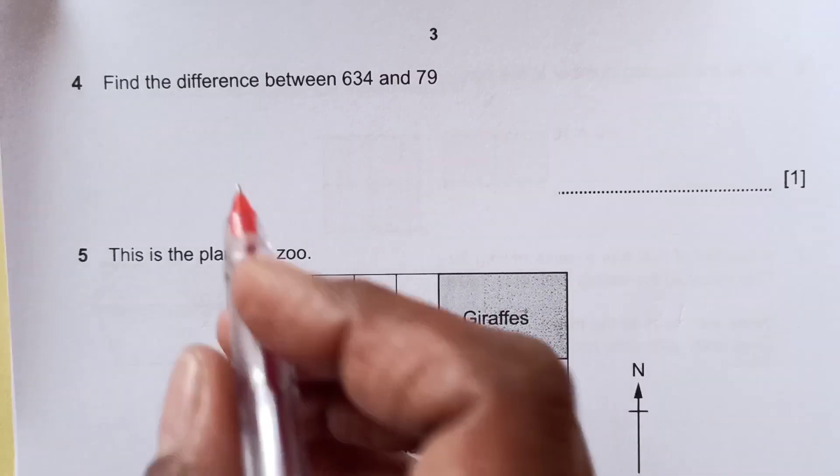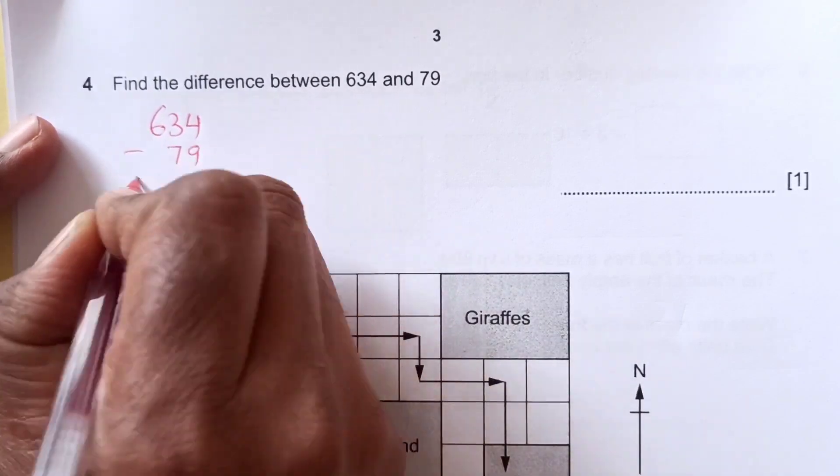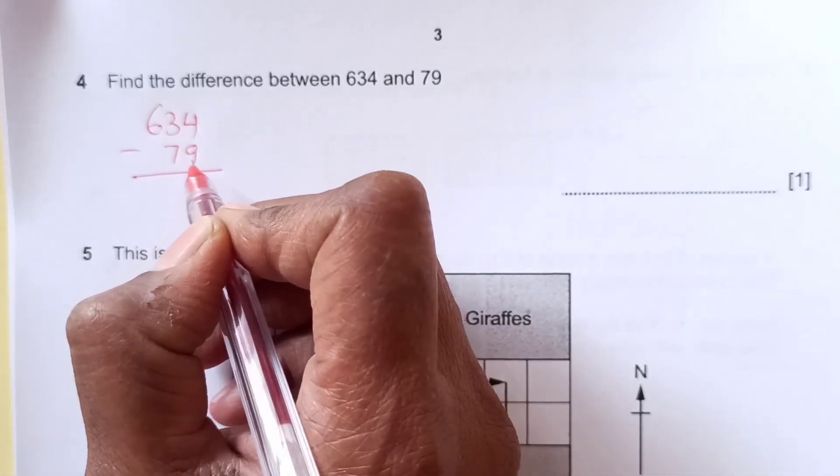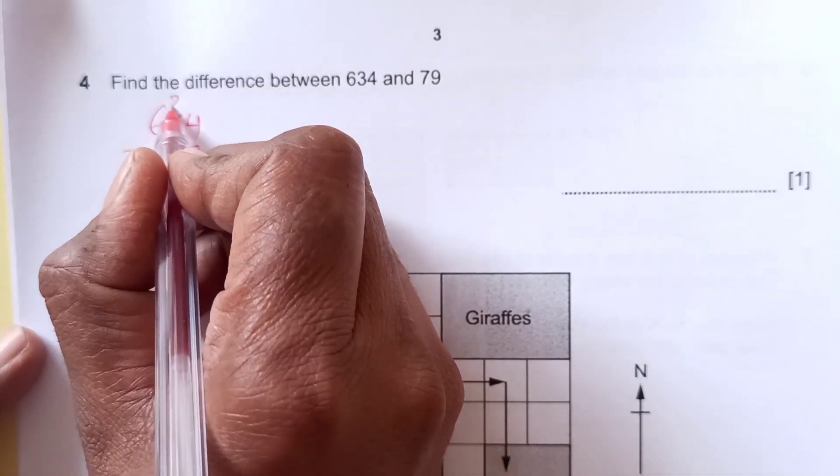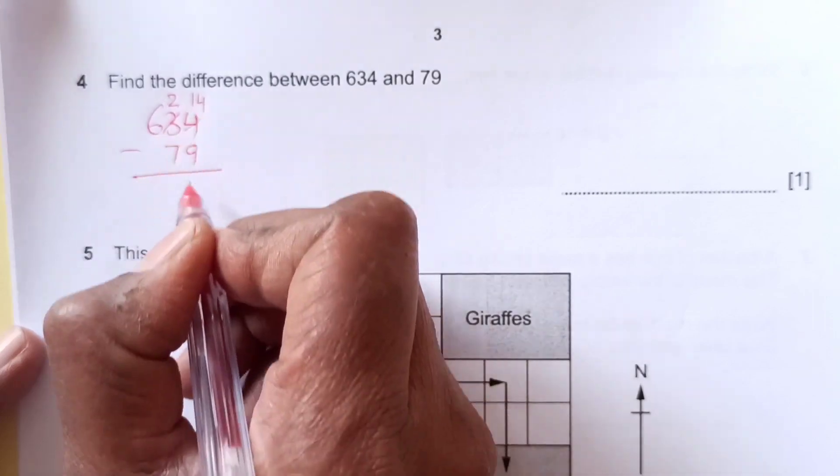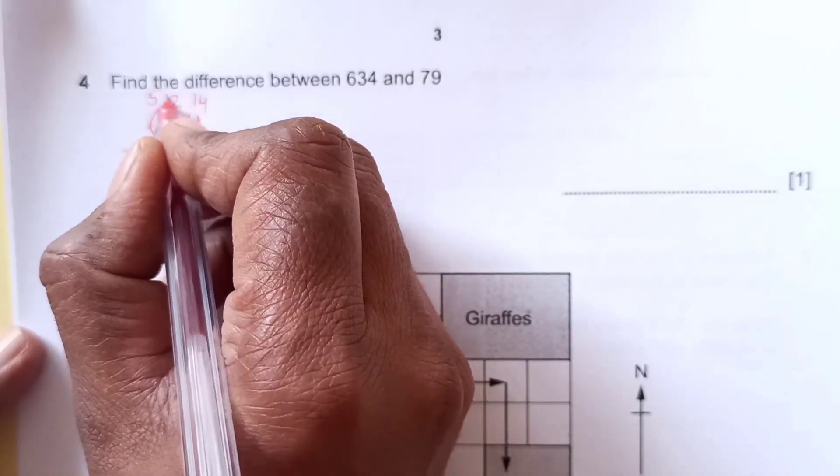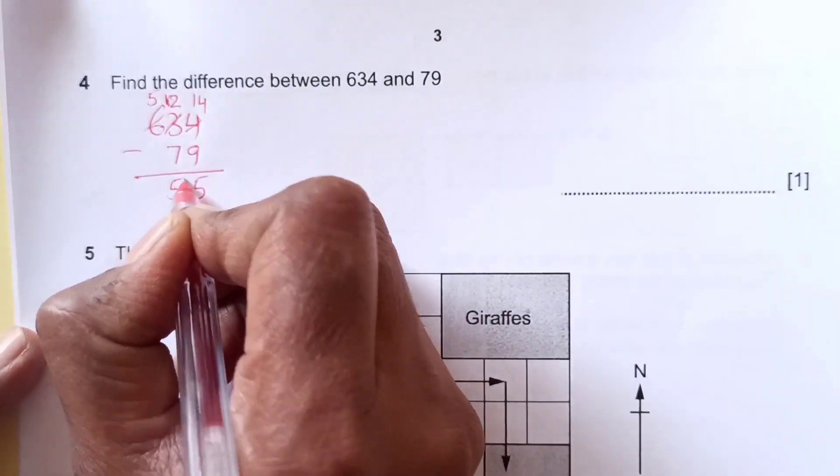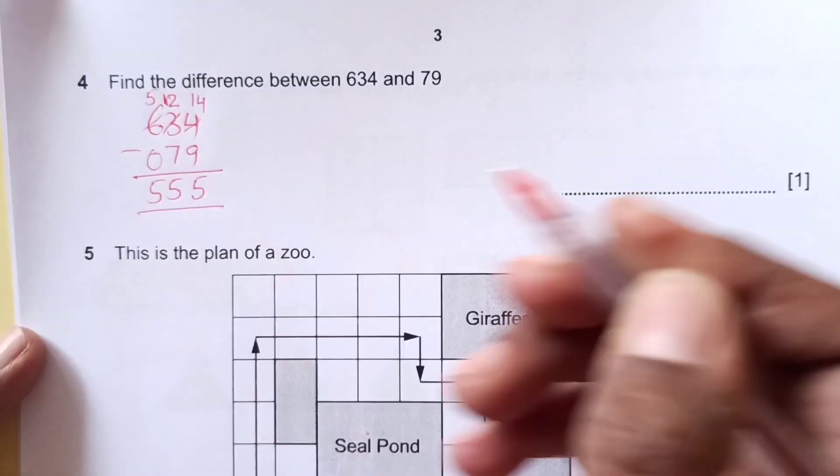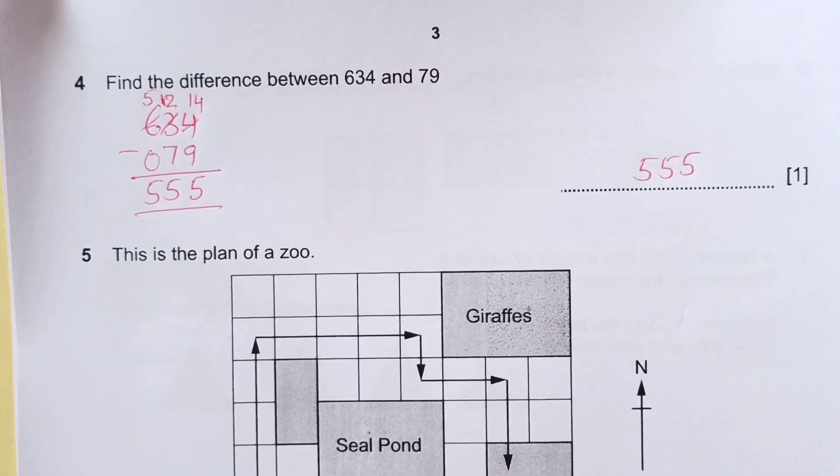Question 4. Find the difference between 634 and 79. We are going to subtract that. 4 is less than 9, so we are going to take carry from here. This will become 2, and here it will become 14. 14 minus 9 is 5. Now we will take 1 carry from here, so it will become 12. 12 minus 7 is 5. And then 5 minus nothing, so it will remain 5. So 555 is the final answer.